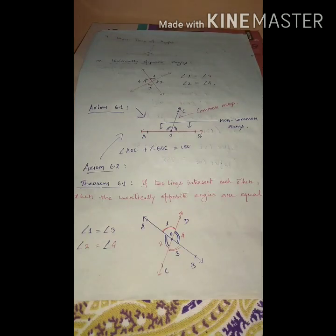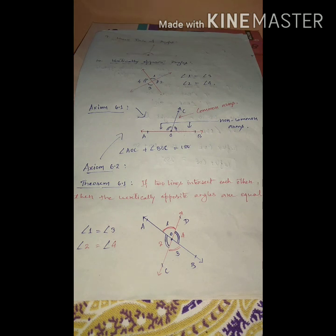Good morning students. We have already completed the different types of angles, linear pair of angles, and vertically opposite angles. Today we start from Axiom 6.1. The diagram is drawn here and the statement for the pair of angles is given in your book.